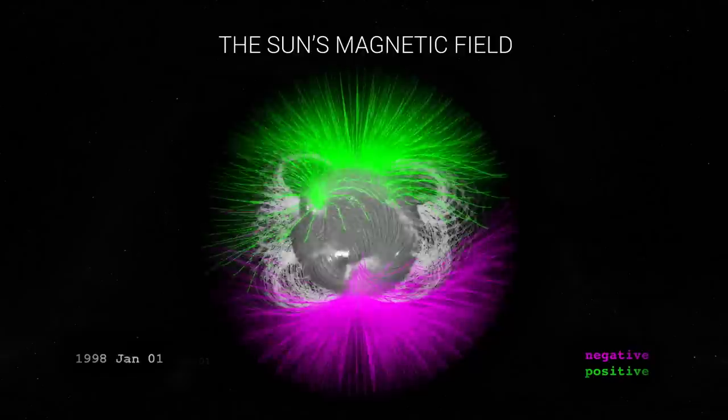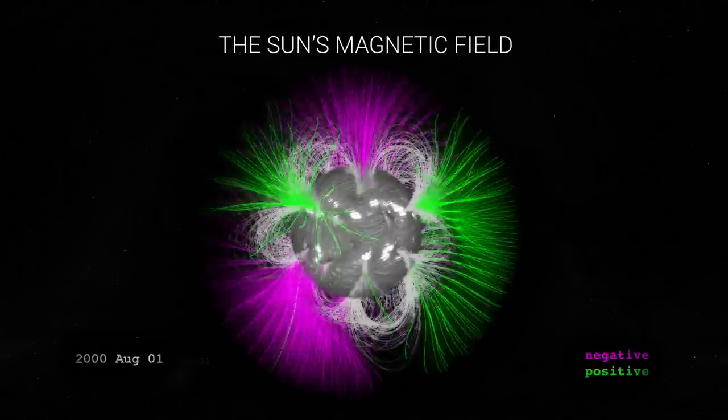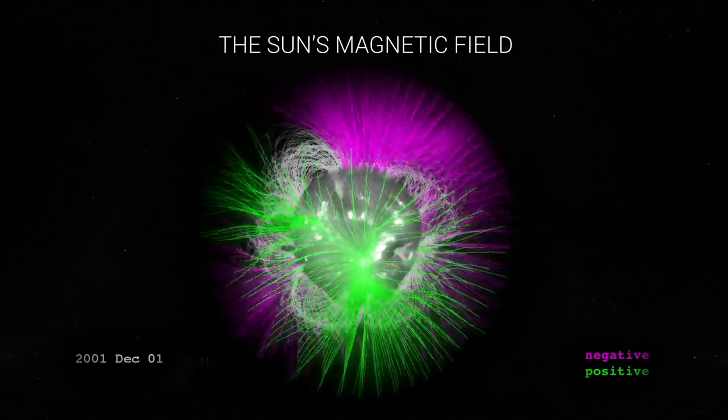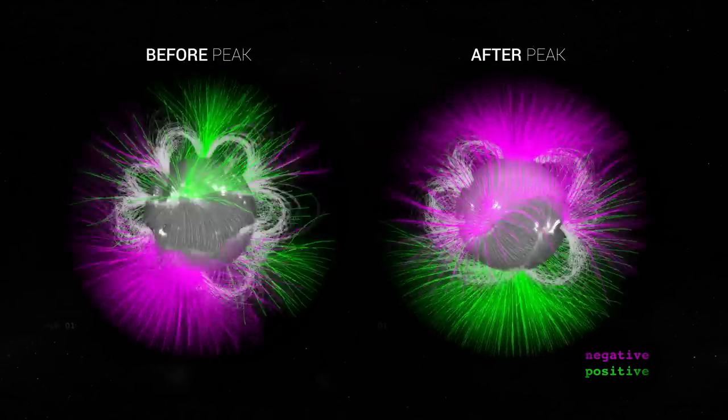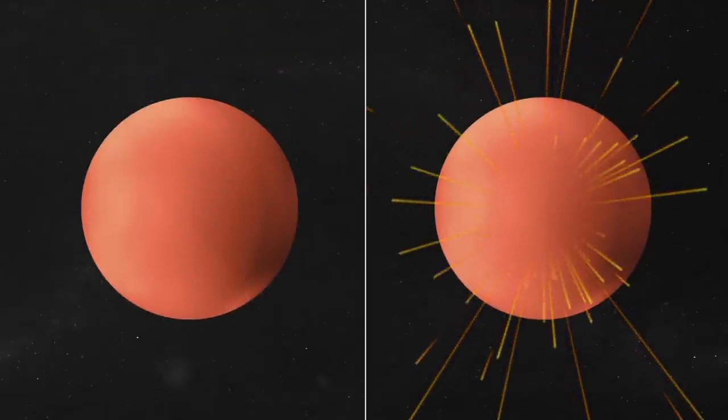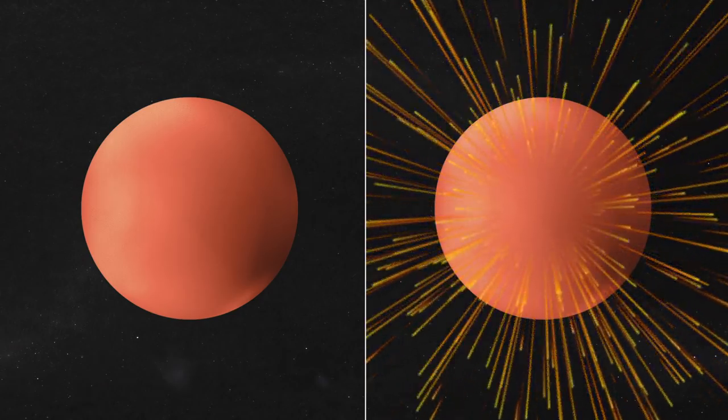Roughly every 11 years, the sun's magnetic field ramps up. This is known as the solar cycle. And at the peak, the sun's magnetic poles flip, north becomes south and vice versa. This cycle causes the sun's activity to sway from calm to turbulent with an abundance of flares and eruptions, which in turn affects the solar wind.